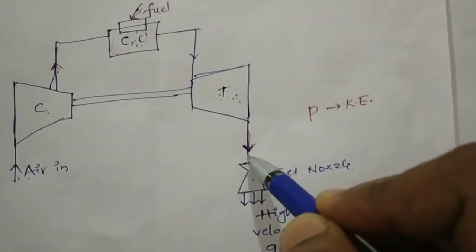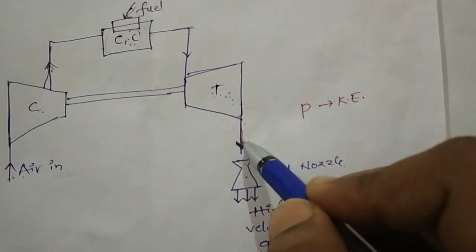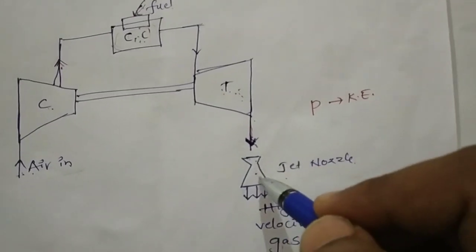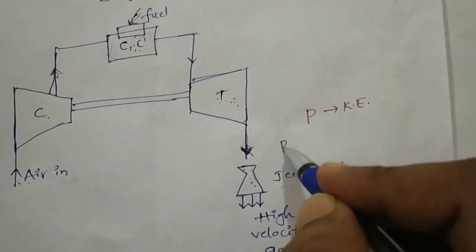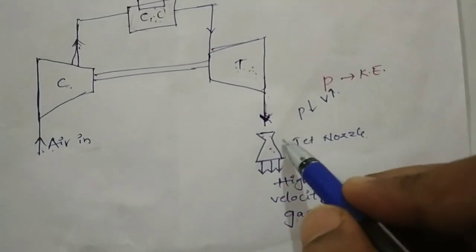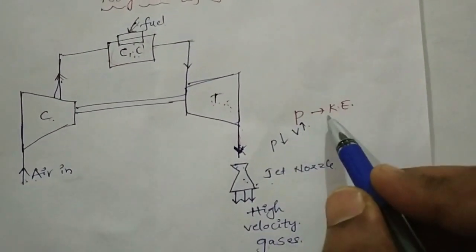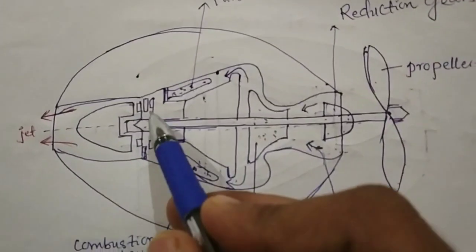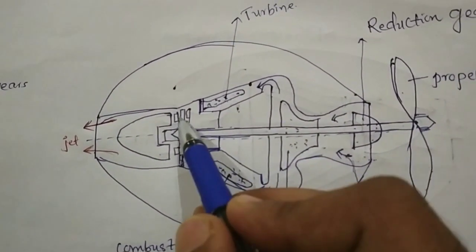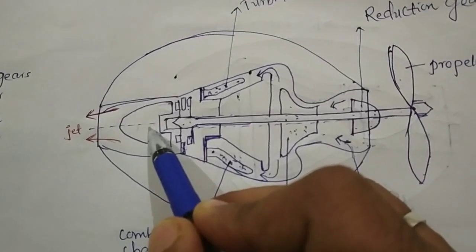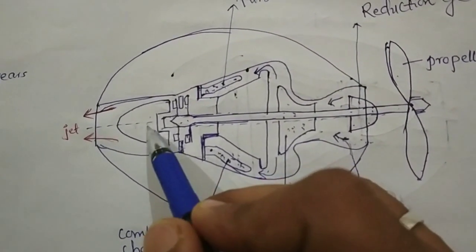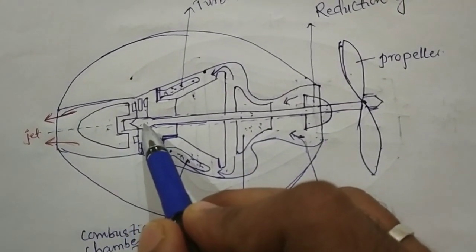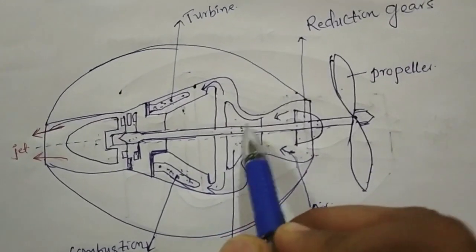The exhaust gases leave at high temperature and low pressure. The reducing pressure energy is converted into kinetic energy. The nozzle decreases pressure and increases velocity. Whatever pressure energy decreases in the nozzle is converted into kinetic energy — velocity increases and the jet moves very fast. This turbine expansion is followed by the gases entering the nozzle, which creates high kinetic energy, and the jet leaves in the backward direction.